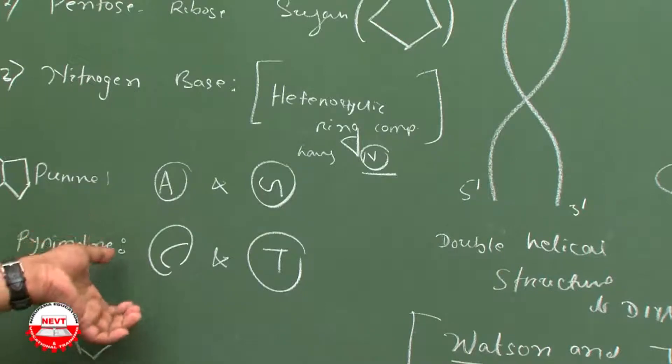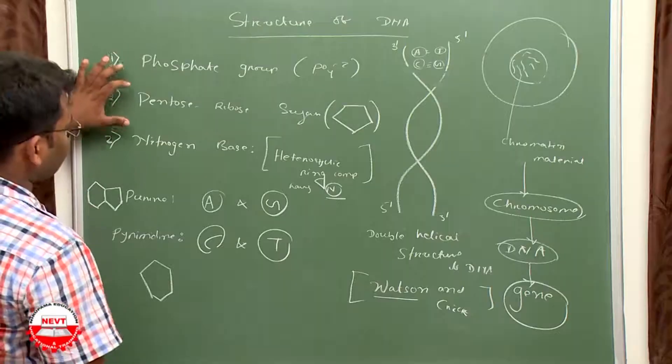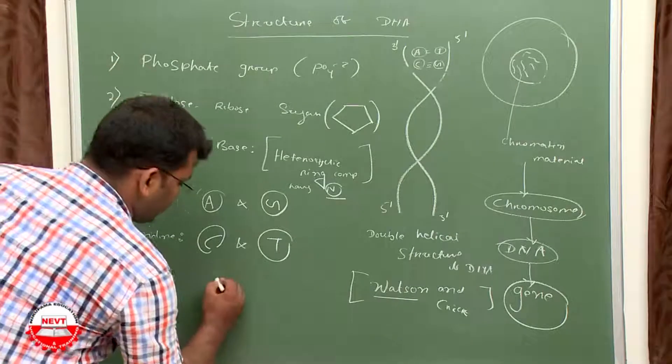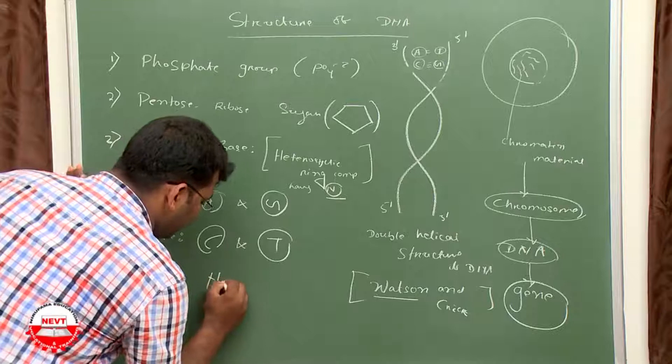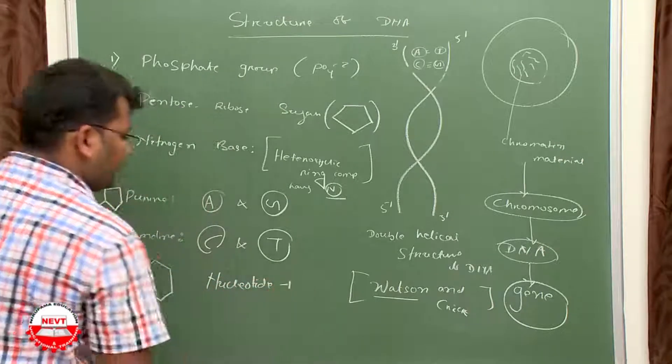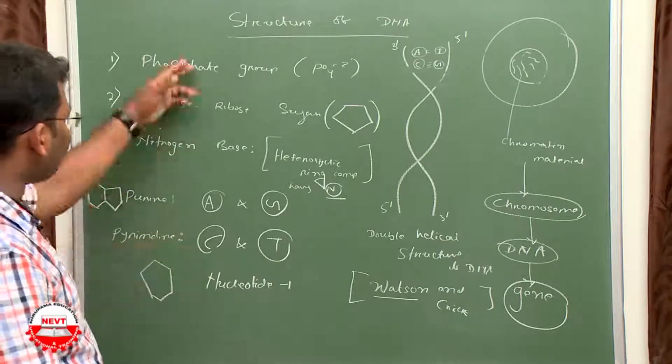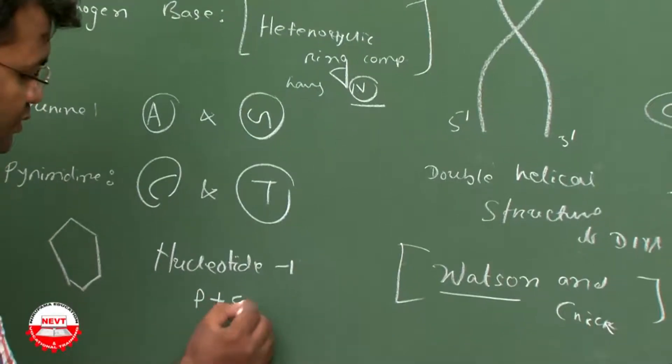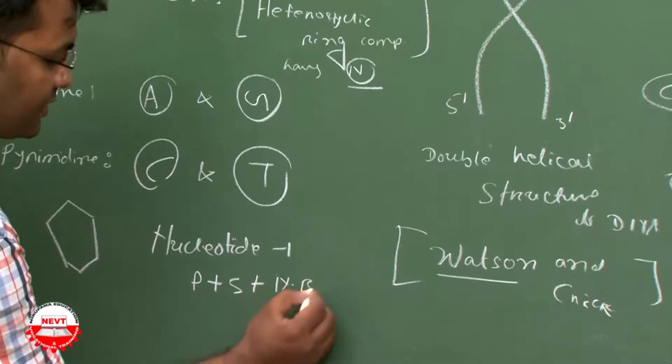These three molecules are present in DNA. The combination of phosphate, pentose sugar, and nitrogen base is called nucleotide. Nucleotide is a unit of DNA which contains phosphate plus sugar plus nitrogen base.